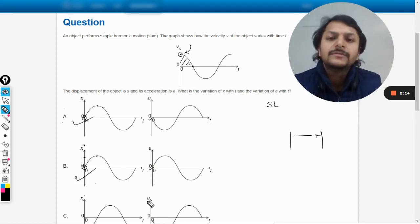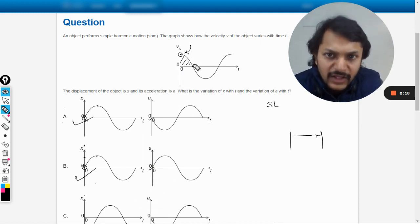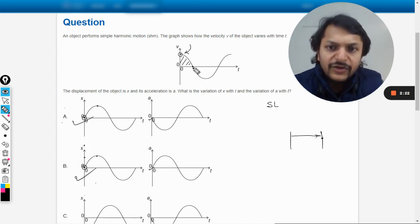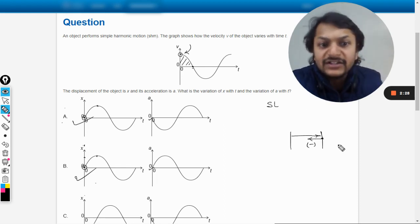So it is zero here, zero here. And now it goes to the extreme position here and the velocity becomes zero. So we know that at this extreme position the acceleration will be towards this, so acceleration should be negative.